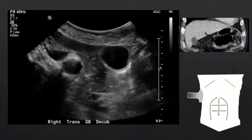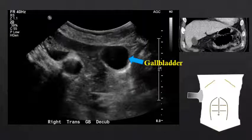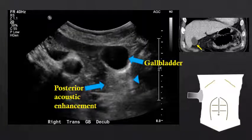If we orient our probe into a coronal orientation with respect to the body, we can see a transverse view of the gallbladder. Again, the gallbladder is a hypoechoic structure with a single-layered echogenic wall. And deep to the gallbladder, we can see what we describe as posterior acoustic enhancement.